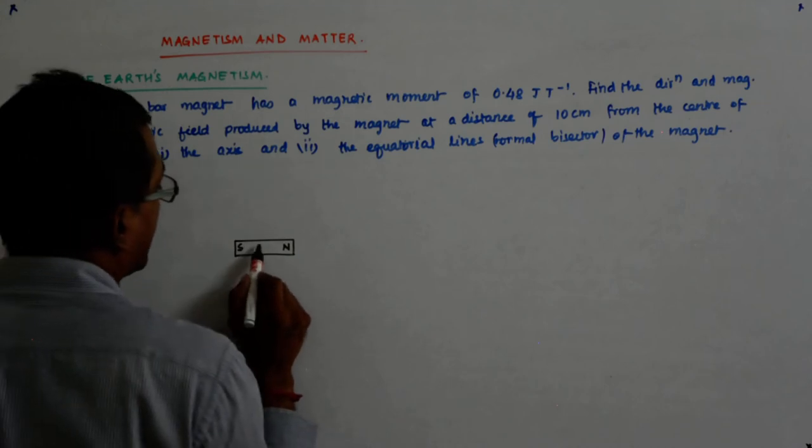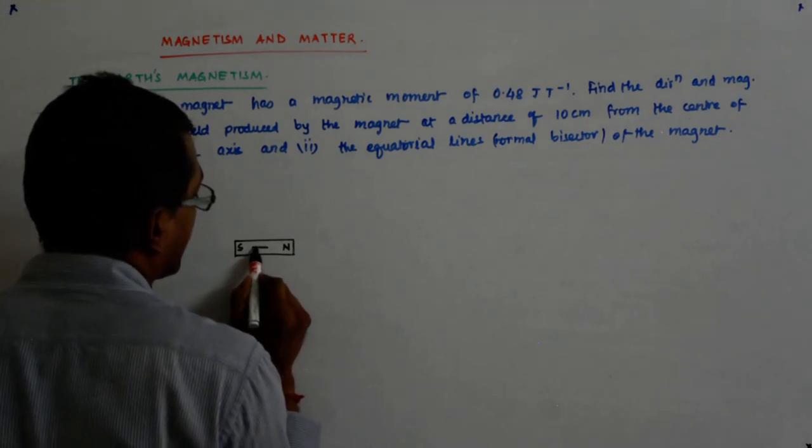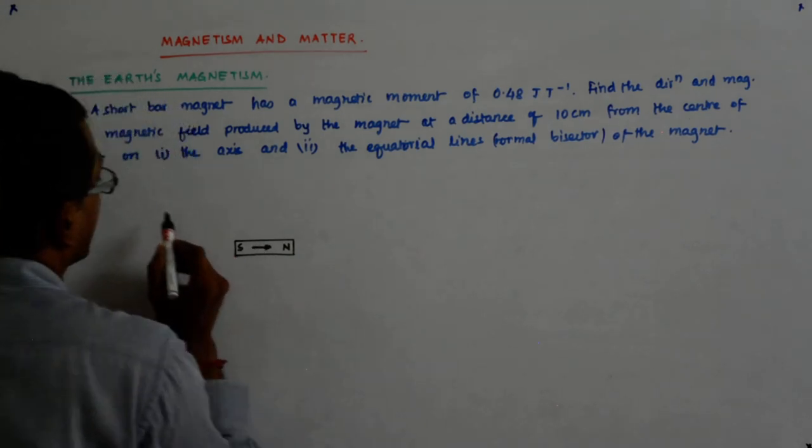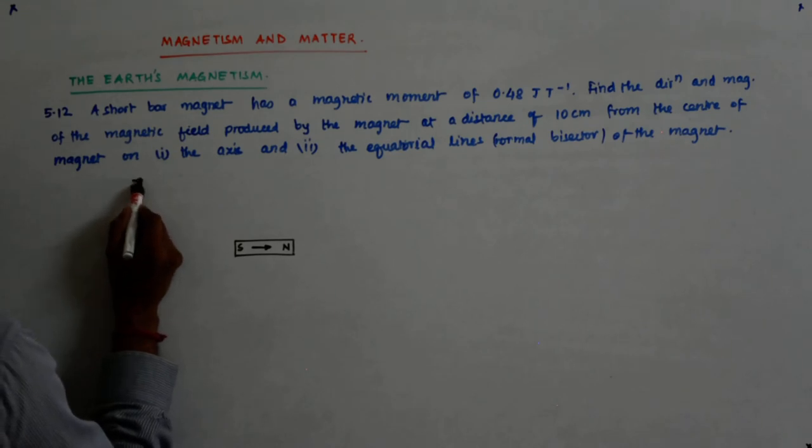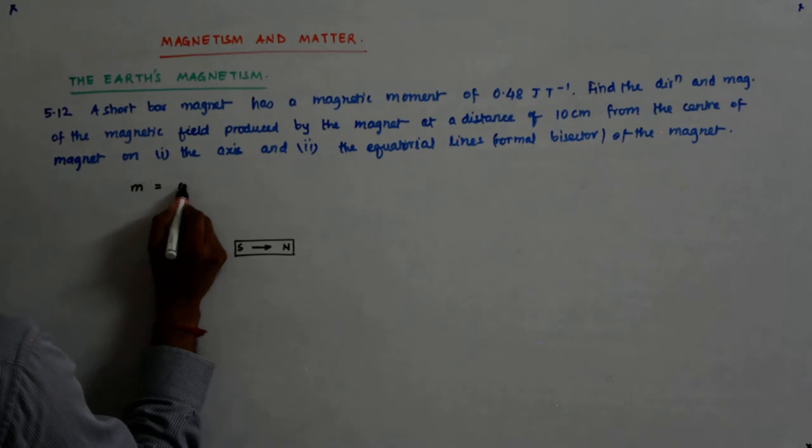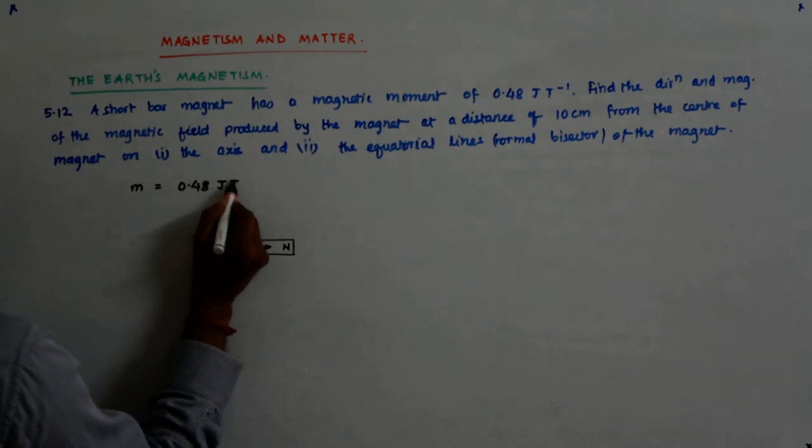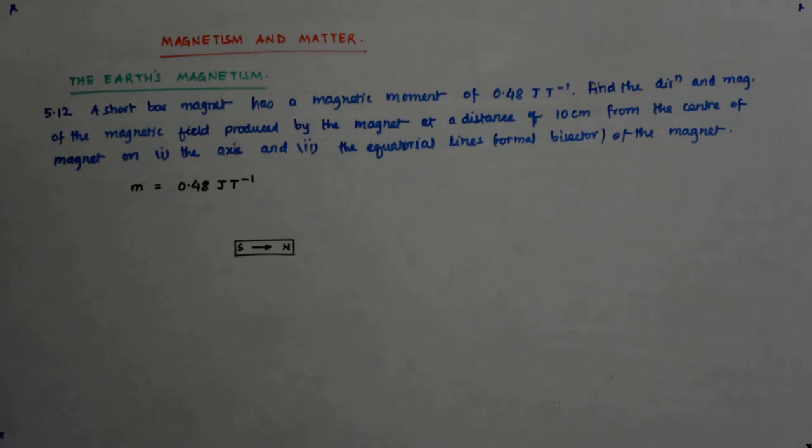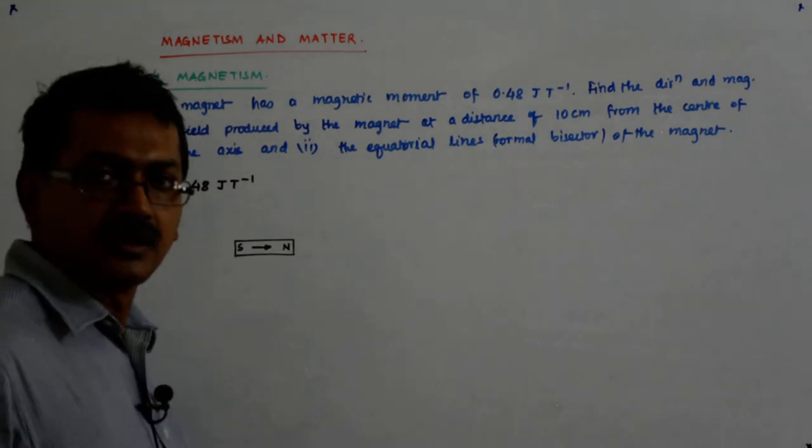Now it has a magnetic moment that is given. That M, the magnitude of the moment is given. So M is equal to 0.48 joule per tesla.